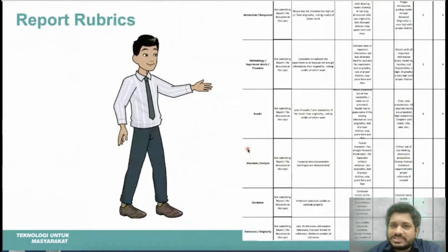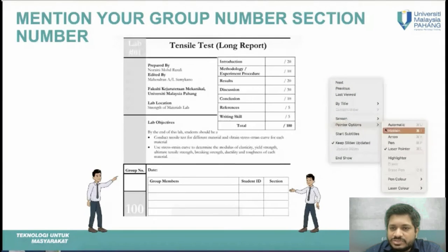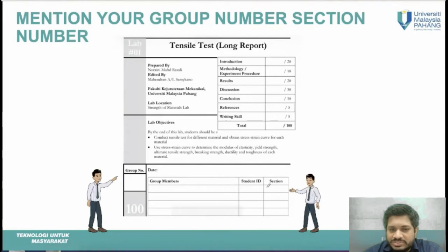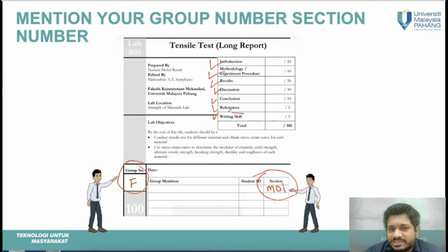The report rubrics cover introduction, methodology or experimental details, results, discussion, conclusion, references, and originality. I will also add writing skills to the rubric. On your title page, make sure to mention your section — for example, M01 — and your group number. These details will be checked.